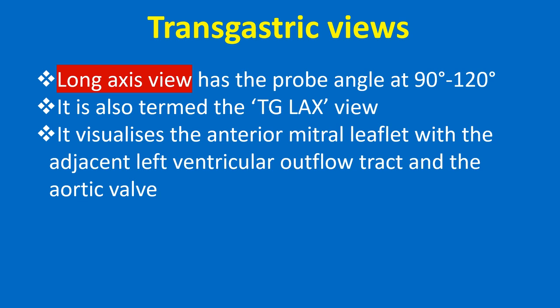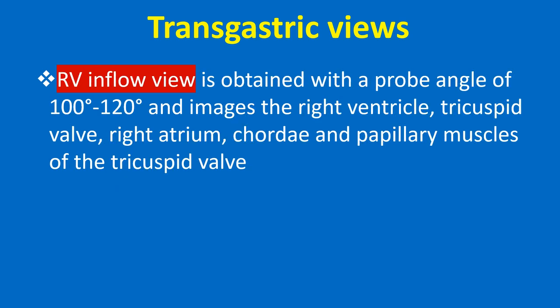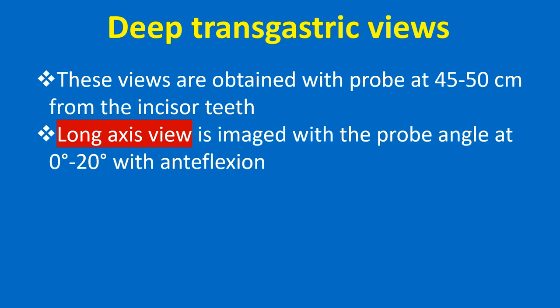The long axis view has the probe angle at 90-120 degrees, also termed the TG LAX view. It visualizes the anterior mitral leaflet with the adjacent left ventricular outflow tract and aortic valve. The RV inflow view is obtained with a probe angle of 100-120 degrees and images the right ventricle, tricuspid valve, right atrium, chordae, and papillary muscles of the tricuspid valve.